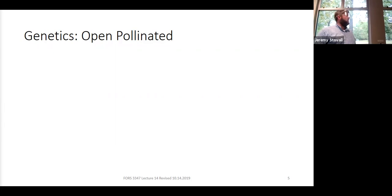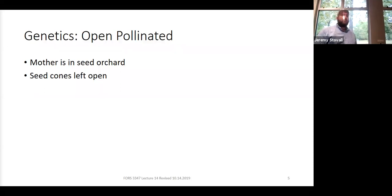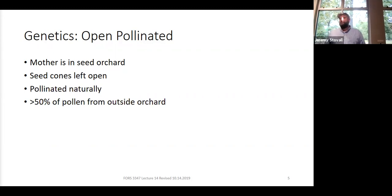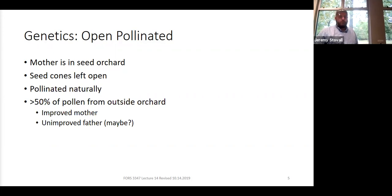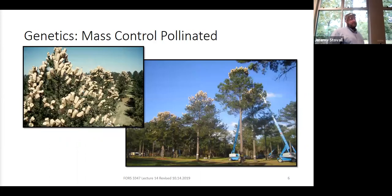Most seedlings sold in the south are going to be open pollinated. The mother tree is in the seed orchard — since all our pines are monoecious, that mother tree is also releasing pollen that pollinates other mother trees in the orchard. You know where you got the seed from, so you know the mother, but the pollen is left open — it could have come from absolutely anywhere. Studies have shown about half that pollen comes from outside the orchard. So you have an improved mother, and your father may or may not be improved. These are called half-sib seedlings — think of them as step siblings.